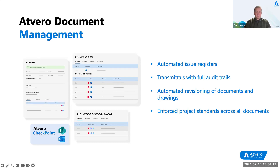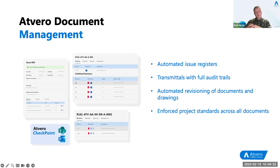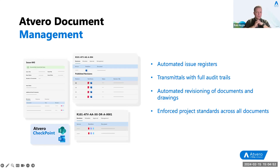Atvero uses a defined naming scheme. We have ISO 19650 built into Atvero, and we maintain all of that — a standard that's becoming very commonplace across the AEC industry. However, if you wanted to use another scheme you can — your own current scheme or a client-mandated scheme. This maintains accuracy of information, and if you have to upload to a client's CDE, it makes it really easy because you know you've already got that name correct.